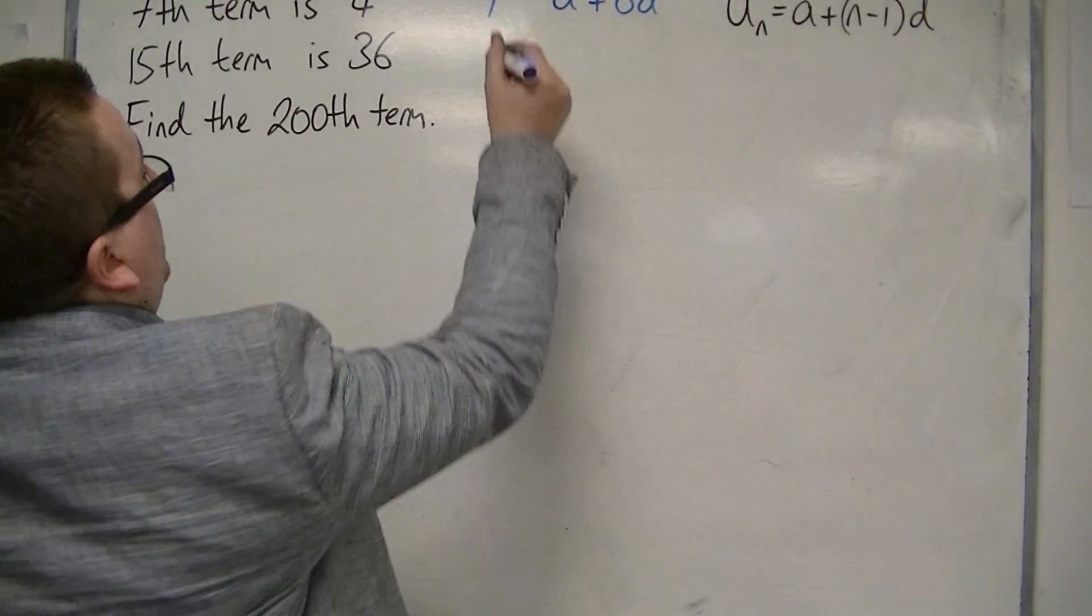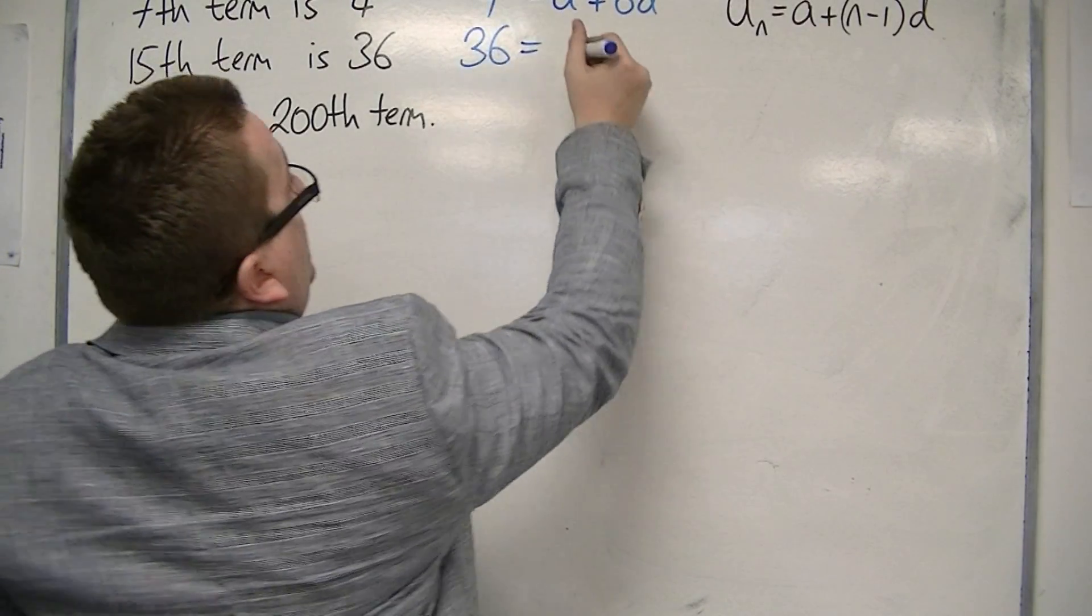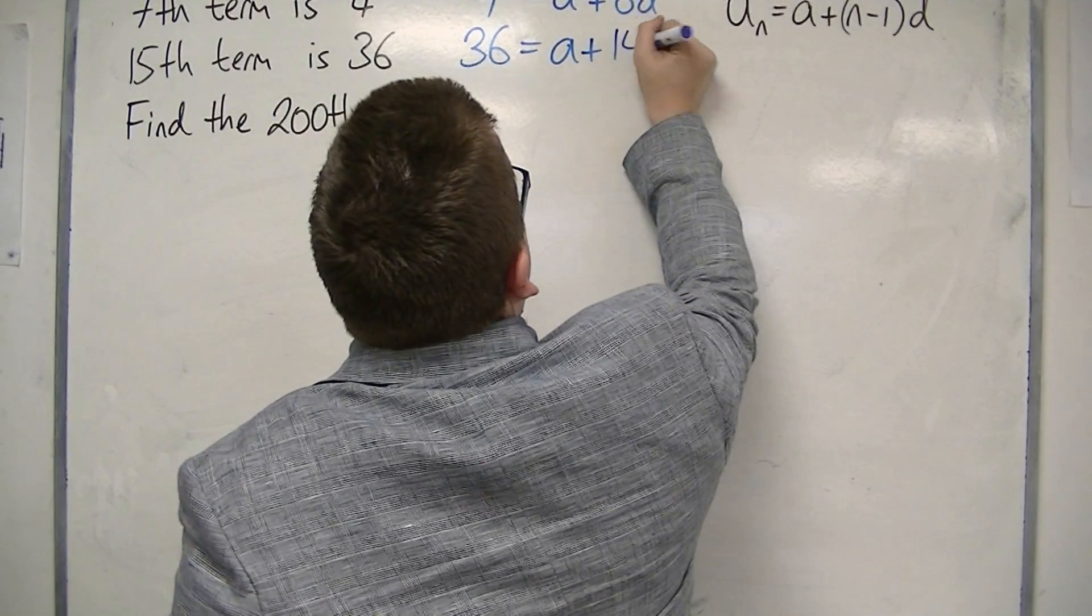Likewise, if the 15th term is 36, then U15, or 36, is A plus 15 minus 1D, so 14D.